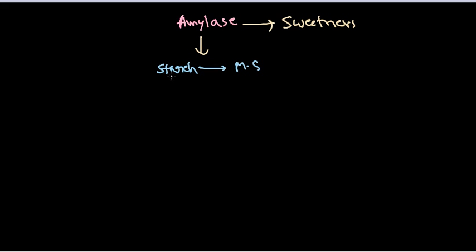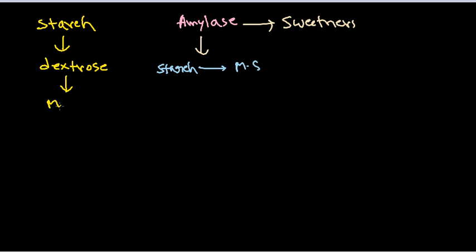When amylase acts on starch, the breakdown scheme is as follows: starch is broken down into dextrose, then dextrose is broken down further into maltose. Maltose is a disaccharide having two units of sugar attached. Maltose is then divided into glucose. Two glucose units form maltose, many maltose units form dextrose, and many dextrose units form starch. This process of breaking starch into glucose is mediated by amylase.